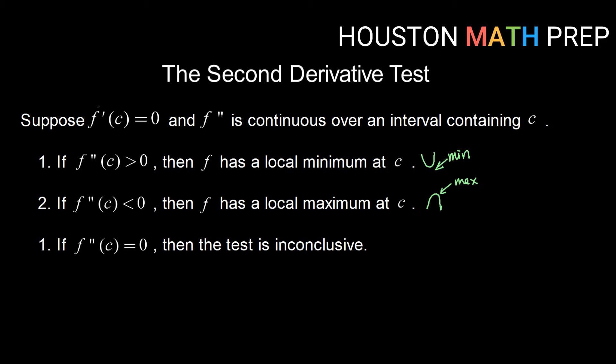Now if we have that same f prime of c equals zero and we plug that value into the second derivative and we also get zero, then the second derivative test is inconclusive. That doesn't mean we don't have a minimum or a maximum. It just means that we can't use the second derivative test to tell what happens.